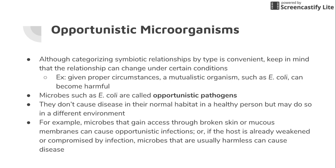AIDS is another example. AIDS kind of destroys our immune system, and you can have some tiny little microorganism that most people would normally be able to fight off. But they can't anymore because AIDS has completely destroyed their immune system — even the common cold is just going to wipe them out. So that would be considered an opportunistic pathogen as well.